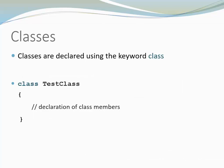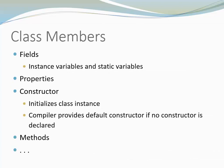Like in Java, classes are declared using the keyword class. C-sharp classes can have fields, constructors, and methods, just like in Java. However, there are many more categories of class members in C-sharp.